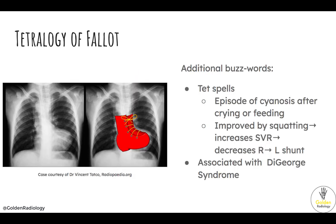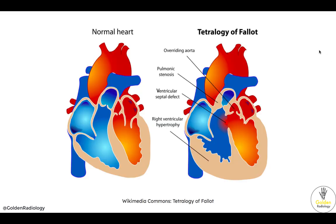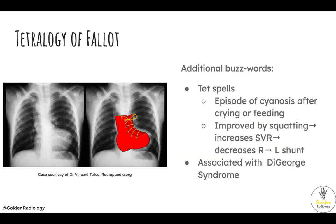A couple more buzzwords and associations for Tetralogy of Fallot: Tet spells are episodes of cyanosis after crying or feeding, and the key thing to know is that they improve with squatting. Squatting increases systemic vascular resistance, which decreases the right-to-left shunt — causing blood to preferentially go through the pulmonary circulation rather than the VSD. A very classic association is that Tetralogy of Fallot is associated with DiGeorge syndrome.